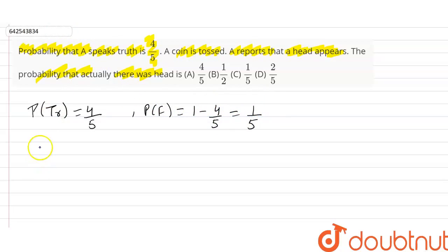Now we have to find the probability of truth when it is a head. So with the help of formula this is P(TR) into P(H upon TR), this is TR upon P(TR) probability of truth into probability of head when he says it is truth plus